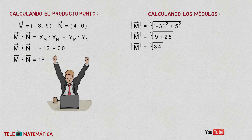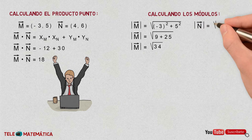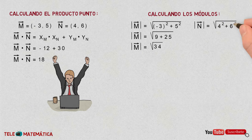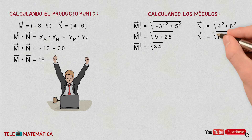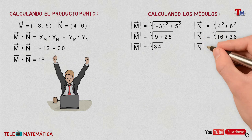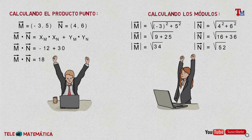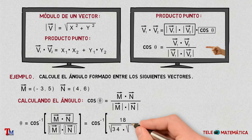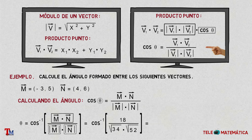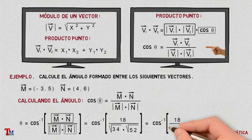In the same way, the module of vector N equals the square root of 4² plus 6², which is the square root of 16 plus 36, so the module of N equals the square root of 52. Replacing both results in the formula, we get the square root of 34 times the square root of 52, and we apply cosine⁻¹ of 18 divided by the square root of 1768.